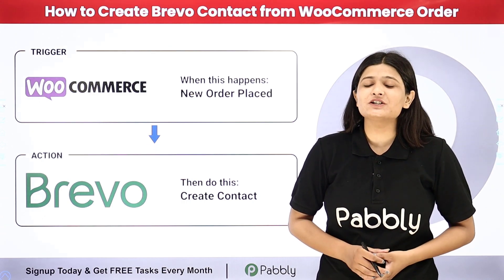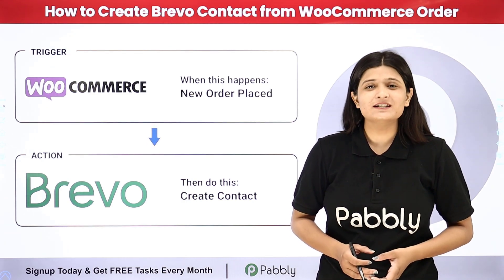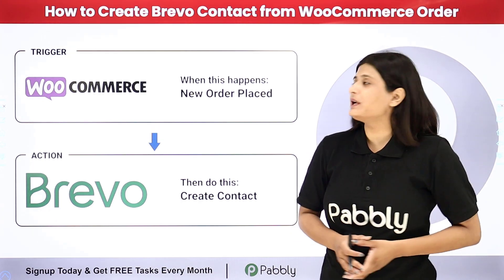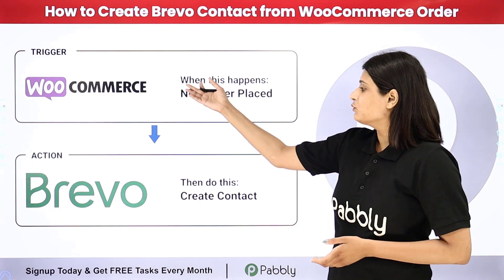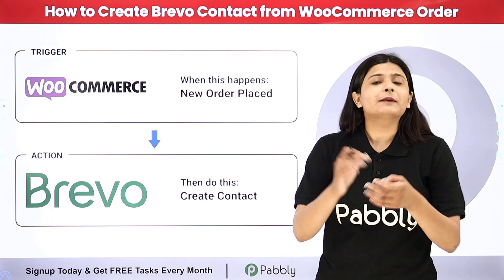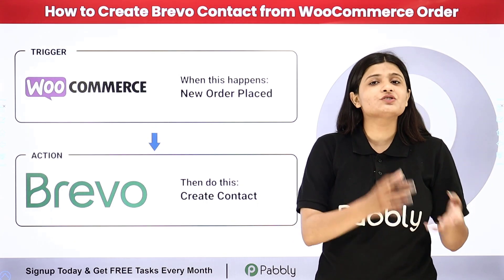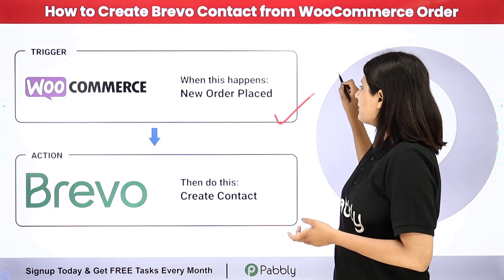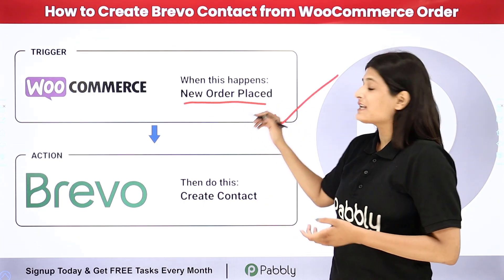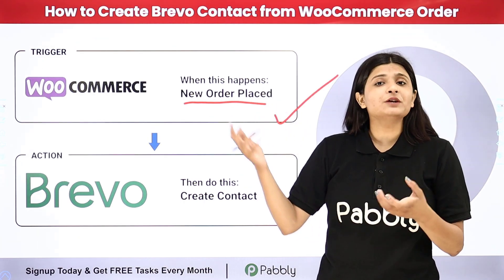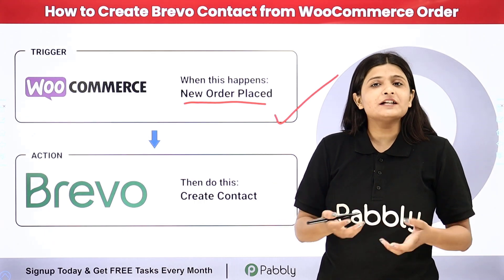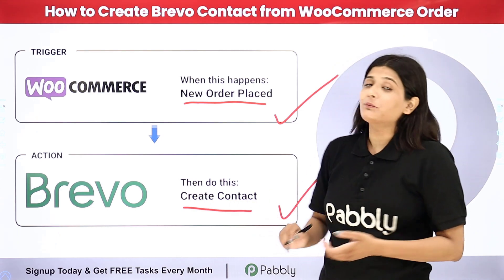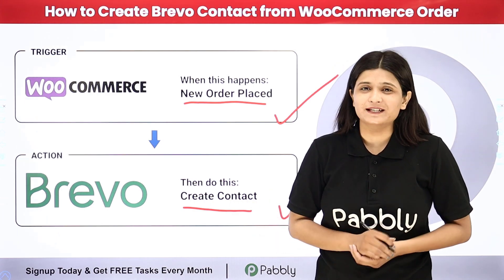Pabbly Connect is an amazing automation and integration software which requires no coding or programming skill. I just need to build a connection between WooCommerce and Brevo. Pabbly Connect runs on two principles which are trigger and action. Here, as my trigger application I will take WooCommerce where the new order will be placed and this complete workflow will get triggered. In my action application I will take Brevo where the contact will be created automatically as soon as the order is placed.